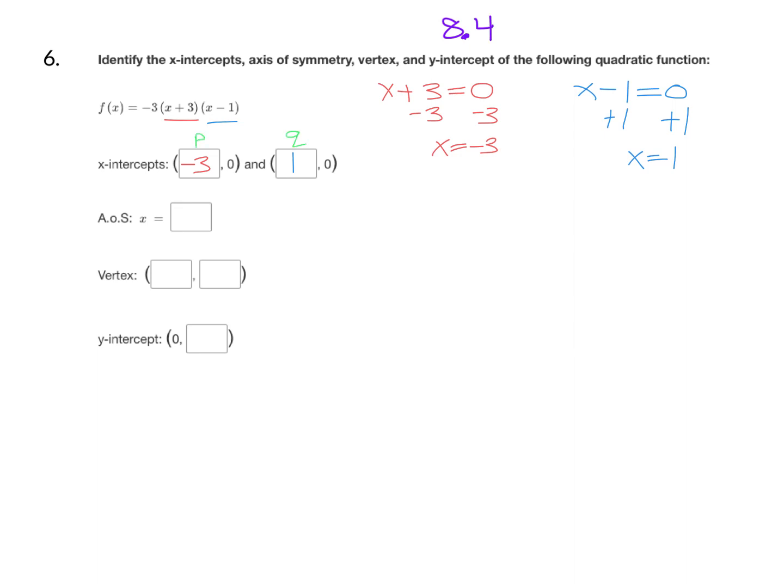The next step is to find the axis of symmetry, and we're going to use the formula x equals p plus q divided by two. It's going to be halfway between the two x-intercepts. Plug in those numbers that we just found, negative three plus one, divided by two. Simplify the numerator first. Negative three plus one is negative two. Then divide that by two, and we get negative one. That's our axis of symmetry, and it's also the x-coordinate of the vertex.